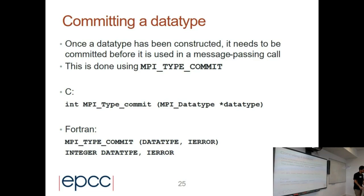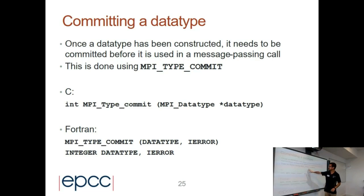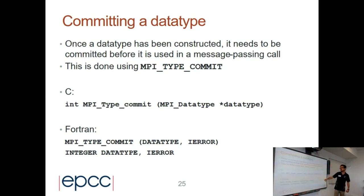One thing I forgot to mention: when we define a data type, we should also commit it in order for it to be usable. We commit the data type using MPI_Type_commit, where the input parameter is the data type we have created.